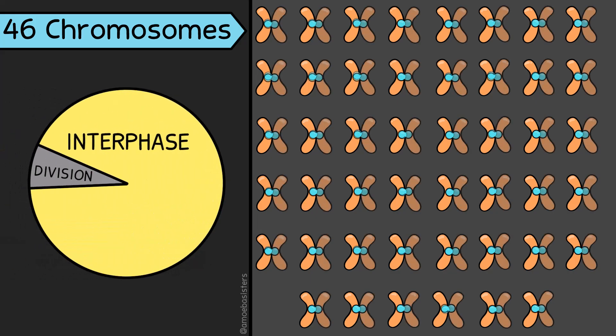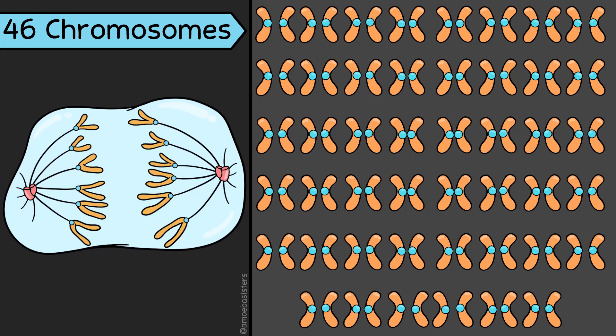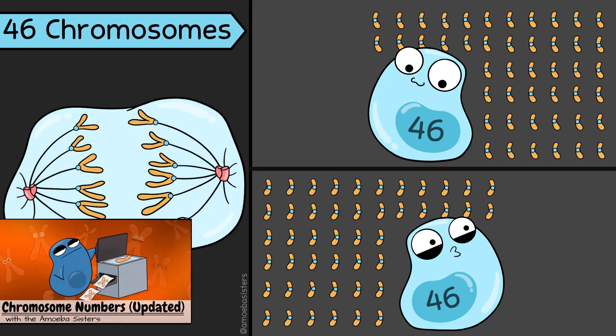In most cases in humans, each body cell has 46 chromosomes. In interphase, the DNA is copied, which will result in duplicated chromosomes. There are still 46 chromosomes here, but that's 92 chromatids in this picture. During a stage of mitosis, these 92 chromatids get pulled apart, so that each cell will have 46 chromosomes. We have an updated chromosome numbers video to help clear that up a little more.